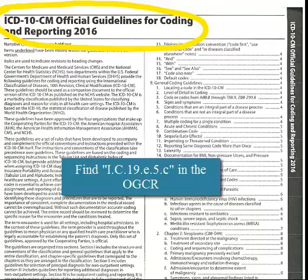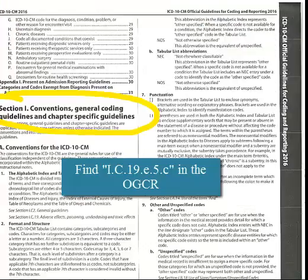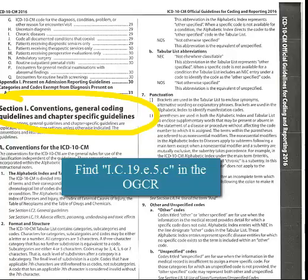At the beginning of your Diagnosis Coding Manual, find the official guidelines for coding and reporting. Now find Section 1, Conventions, General Coding Guidelines, and Chapter Specific Guidelines.